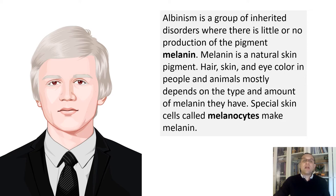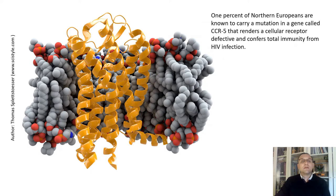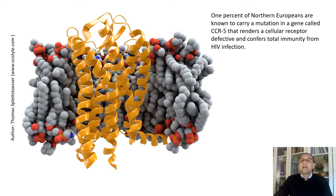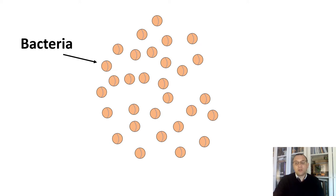So far we were talking about mutations that are not beneficial — well, sickle cell anemia is beneficial, but only where malaria is prevalent. Let's take a look at beneficial mutations. One percent of North Europeans carry a mutation in a gene called CCR5 that renders a cellular receptor defective and confers total immunity to HIV infection. They do not have a co-receptor for HIV. A co-receptor is like a knob that HIV uses to enter the cell — no co-receptor means no entry. So this mutation is a beneficial one that provides HIV resistance.